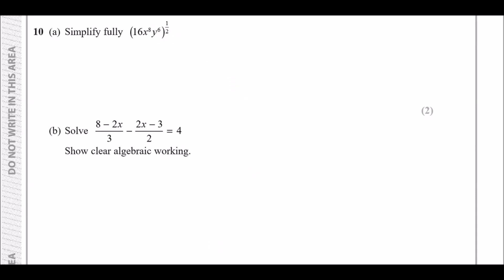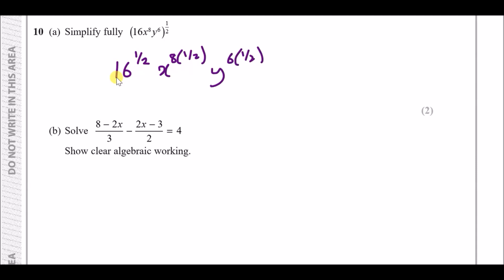Number 10a: simplify fully this expression. These questions are super easy if you know the trick. When you have powers and there are no plus or minus signs, distribute the power to every single term. So 16 gets the power of a half, x which already has a power gets an additional half, and y gets an additional half as well.